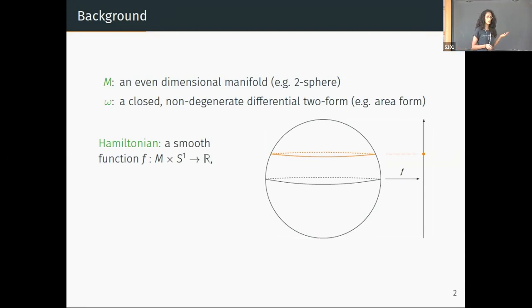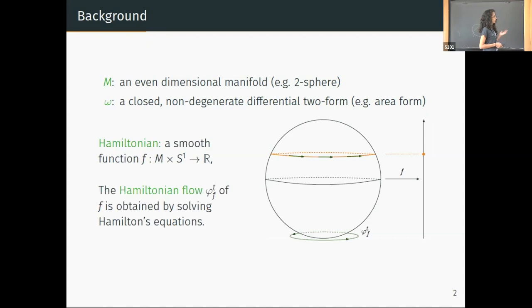On such a manifold, we consider smooth functions from the manifold to R, called Hamiltonians. We allow them to be time dependent, with the S¹ variable as time. They model the energy of such a mechanical system. If we solve the equations of motion with respect to f, we obtain a Hamiltonian flow which represents the physical flow of the system.